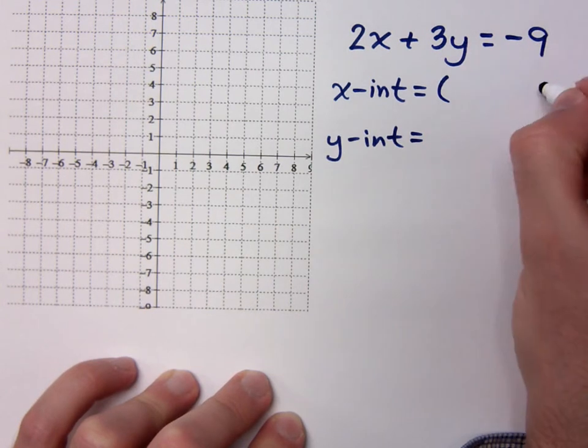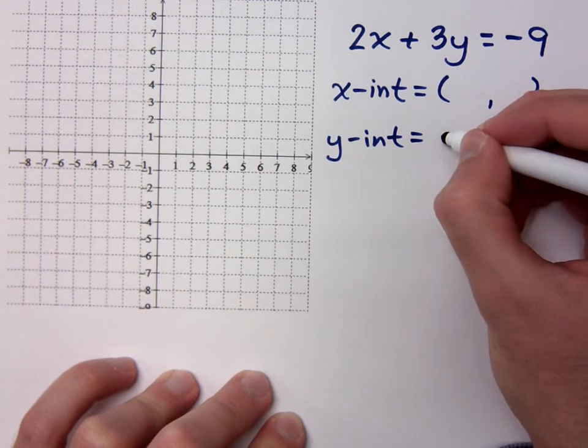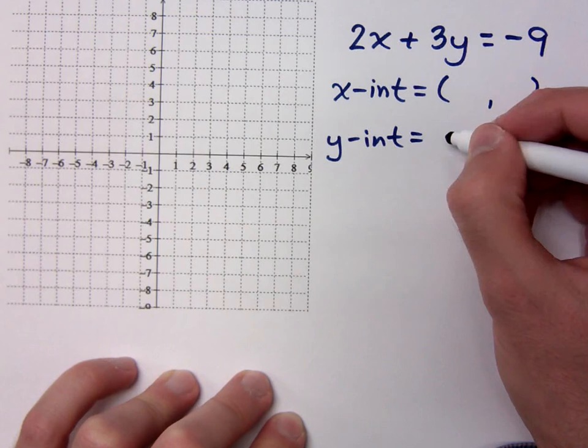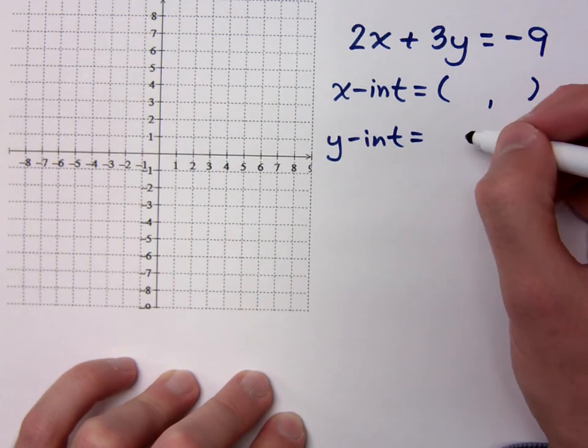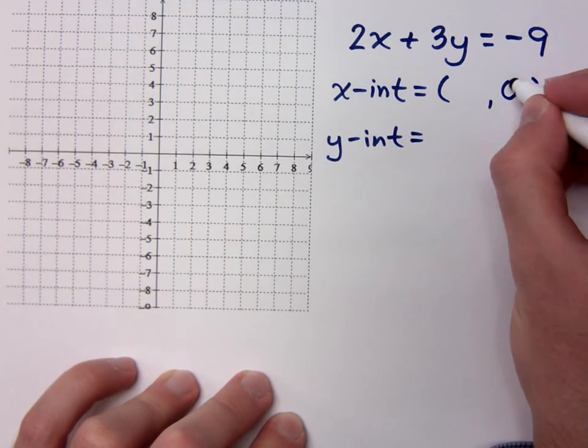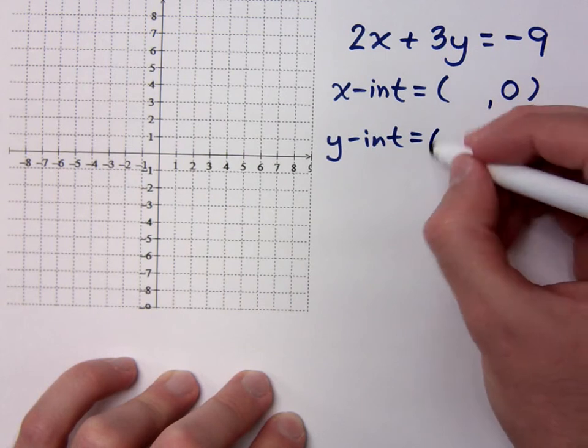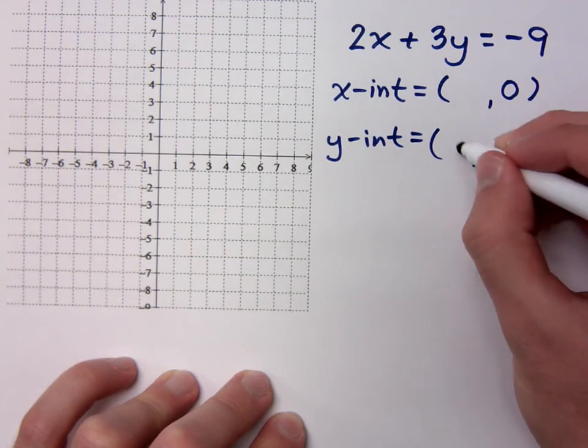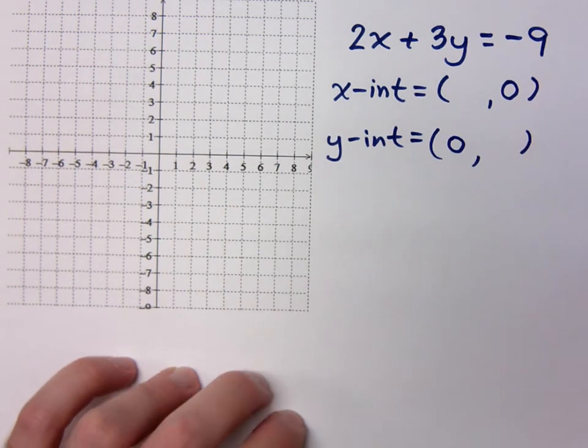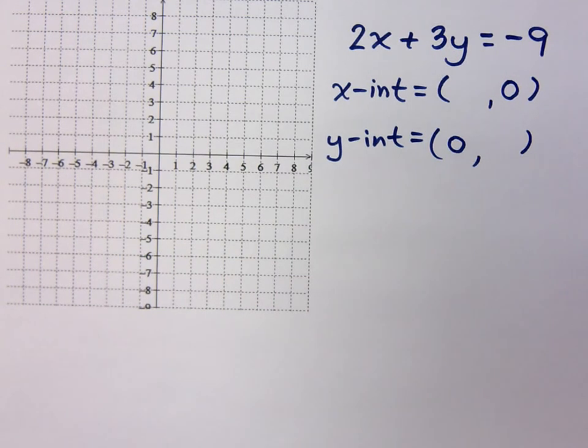So we know for the x-intercept, what do we already know about the x-intercept? The y is 0. What do you know about the y-intercept? You already have half the coordinate, or half of the ordered pair.